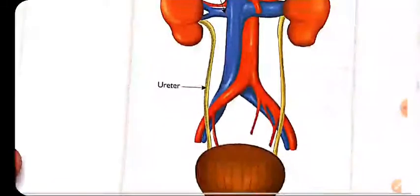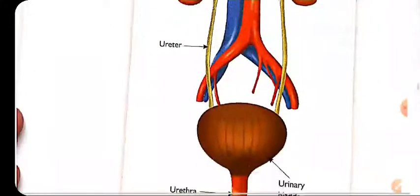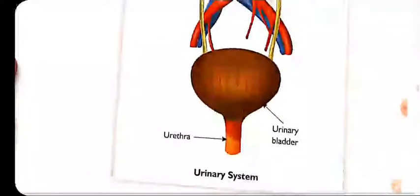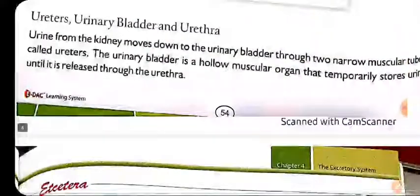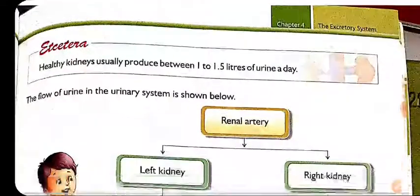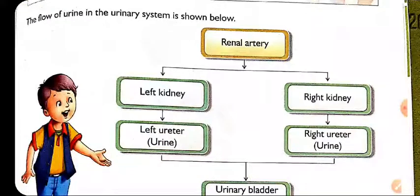Next are the ureters — there are two tube-like structures which transport the waste filtered from the kidneys to the urinary bladder. The urinary bladder is a sac-like, balloon-shaped structure that stores the urine temporarily until it is expelled out from the body through the urethra. That is it for today's topic; in the next topic we will discuss the flow chart of urine flow in the urinary system.